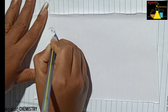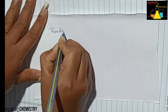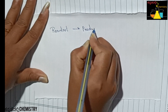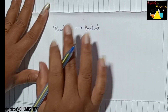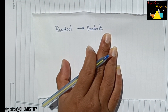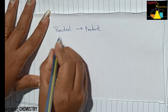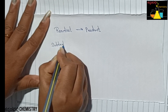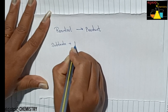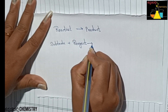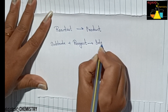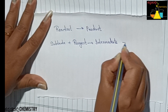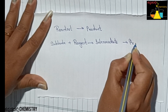For example, consider the reactant. The reactant does not go directly to the product. The actual procedure involves: substrate reacts with a reagent to give an intermediate product first, and then from that intermediate, the final product is formed.